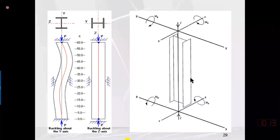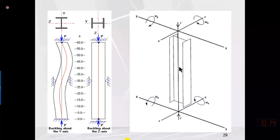To control buckling or bending about the x-axis, we constrain the section in the y-direction. Similarly, if a section bends about the y-axis, it tends to displace in the x-direction, so we provide bracing to constrain movement of the mid-span in the x-direction. The bracing points may be different about each axis.